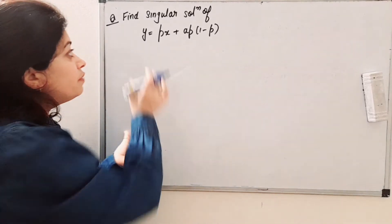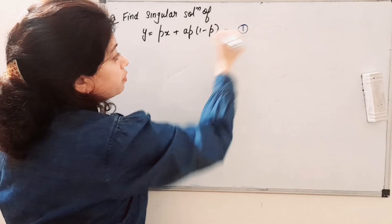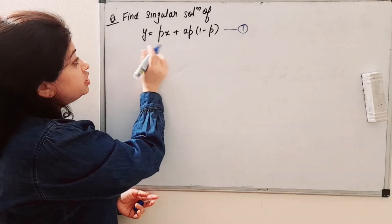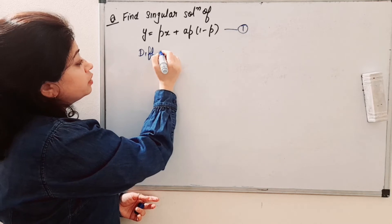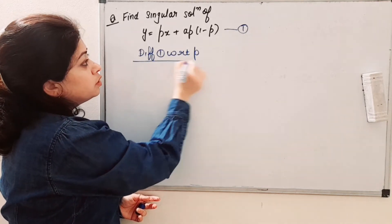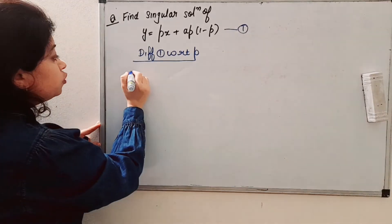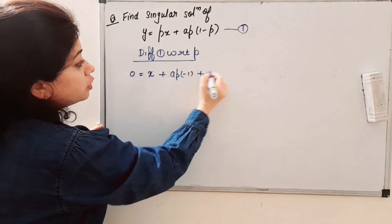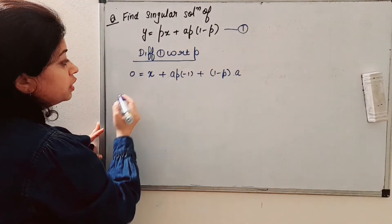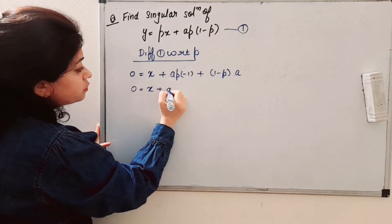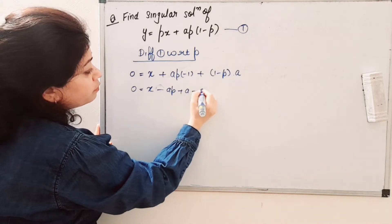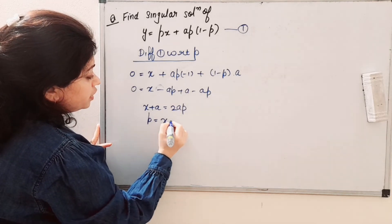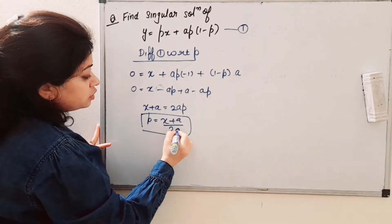Now we have the second example: find the singular solution of this equation — call it equation 1. Step 1 is to differentiate equation 1 with respect to p. Differentiating with respect to p, we get 0 = x + (a − ap) + (−ap), which simplifies to x + a = 2ap. Therefore p = (x + a) / (2a). This is step 2.